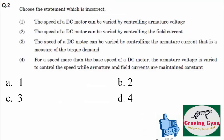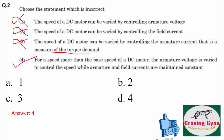Second question: choose the incorrect statement. First option — the speed of the DC motor can be varied by controlling armature voltage — that statement is correct, so statement 1 is false as an answer. The speed can also be varied by controlling field currents (statement 2) and armature current as a measure of torque demand (statement 3) — both are correct. Fourth option says for a speed more than the base speed you can't achieve more than base speed, hence it is an incorrect statement, so option D is correct.